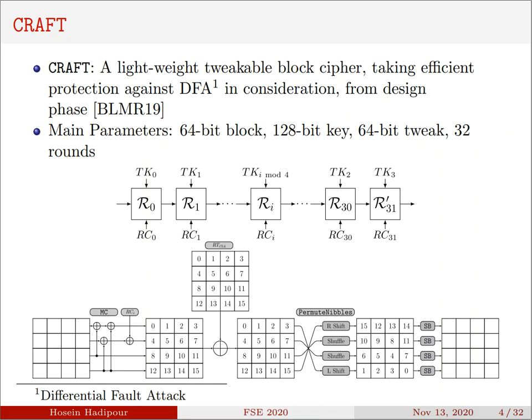The first operation in each round is MixColumns, in which the internal state is multiplied by an involutory binary matrix. Then round-dependent constant and round tweakey are XORed to the internal state. After that, an involutory permutation is applied on the position of nibbles. Lastly, as the only non-linear operation, the same 4-bit S-box is applied on each nibble. The last round doesn't include PermuteNibbles and S-box, and it is totally linear.